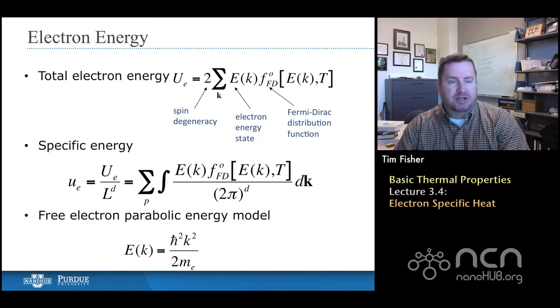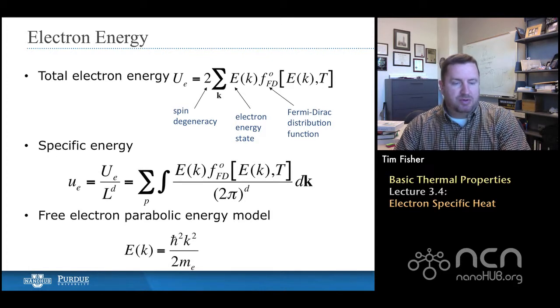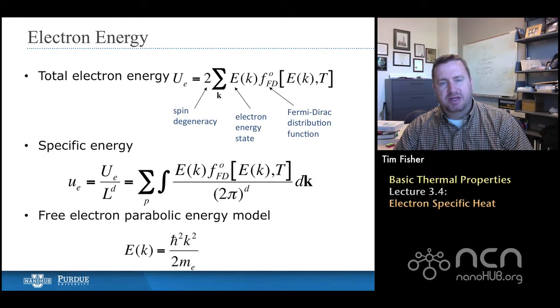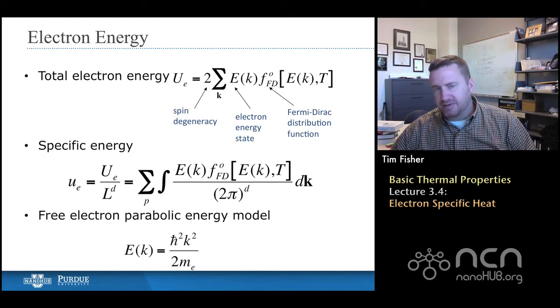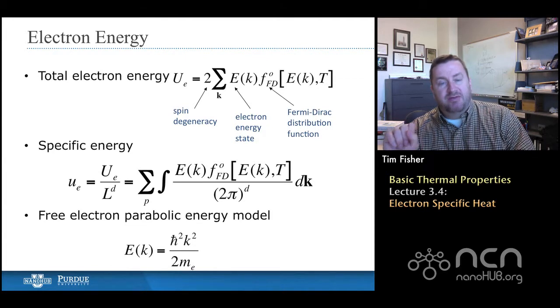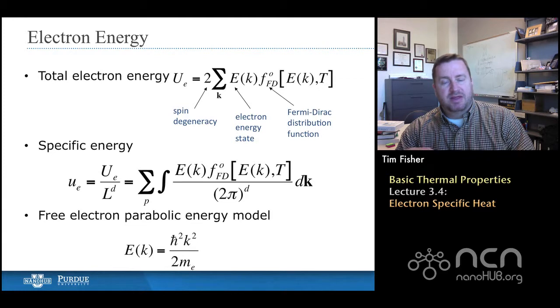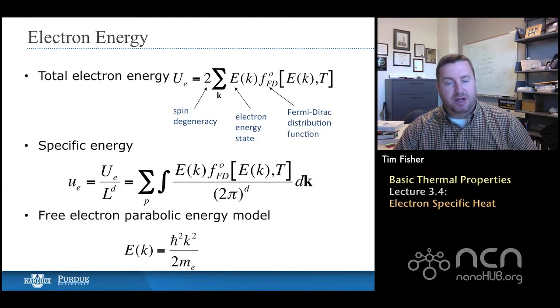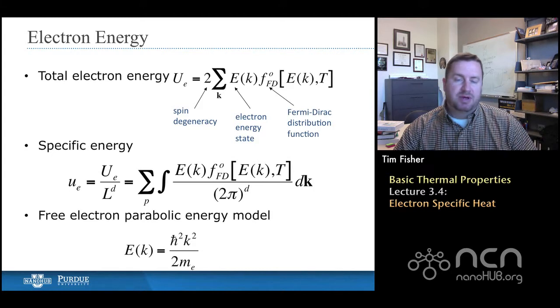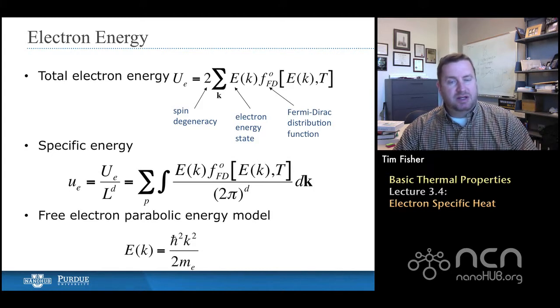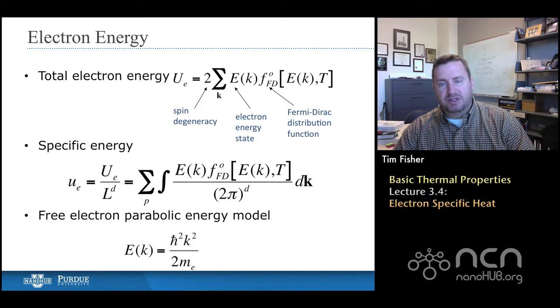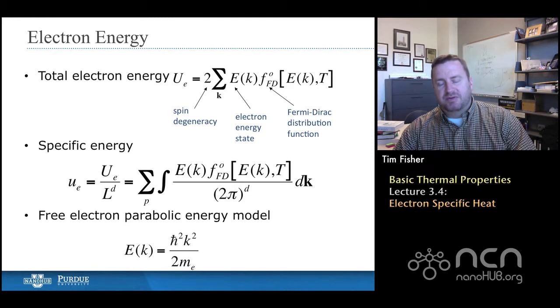We'll calculate internal energy, U, as the extensive property in much the same way that we did before with a couple of caveats. The first one is that we have a factor of two that shows up in front because of spin degeneracy, and that comes about because electrons can have up or down spin in a given energy state. In many cases, in dealing with electrons, you'll see a factor of two that's a little bit different than what you see for phonons.